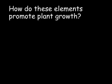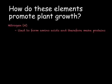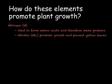So how do these elements promote plant growth? First we'll look at nitrogen. Nitrogen is an essential element in the formation of amino acids and therefore in the formation of proteins. Nitrogen is also found in nitrates which promote strong growth and prevent yellow leaves.